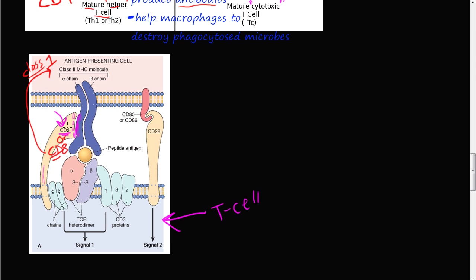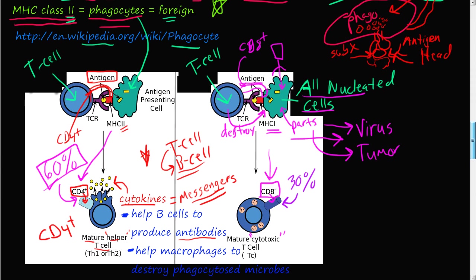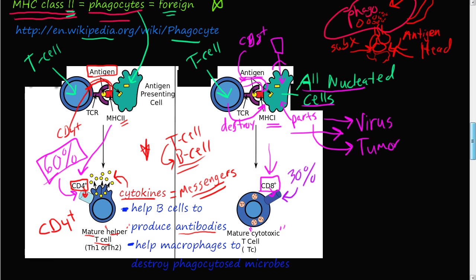This CD4 molecule — the orange thing here — can be changed to CD8. If this is a CD4+ T-cell, it will have the CD4 molecule. If it's a CD8+ T-cell, it will have the CD8+ protein, and then it will only bind to MHC class 1. So that kind of sums up T-cells — how they work and what they do. We'll see you in the next video.